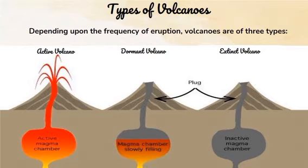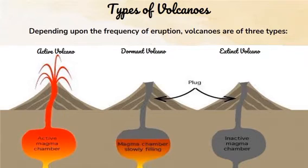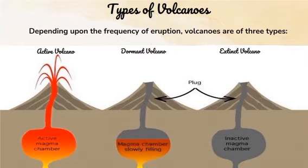Active volcanoes are the volcanoes that may erupt at any time or have erupted in the recent past. Mount Fuji and Mount Erebus are some well-known active volcanoes. Dormant volcanoes are those that have not erupted for several years but could erupt in the future. The Narcondum in the Andaman Islands and Mount Kilimanjaro are dormant volcanoes.